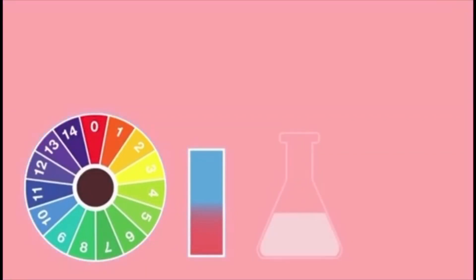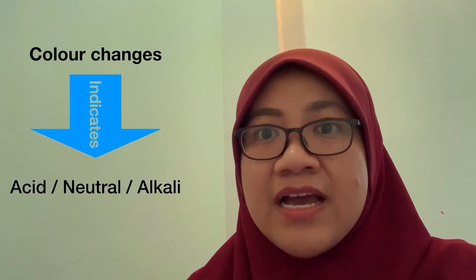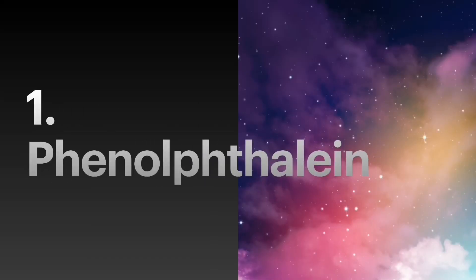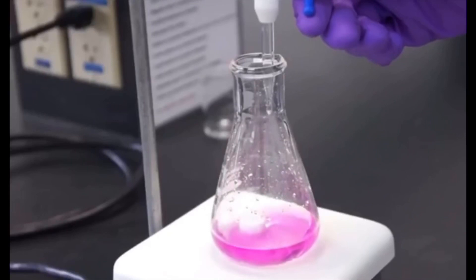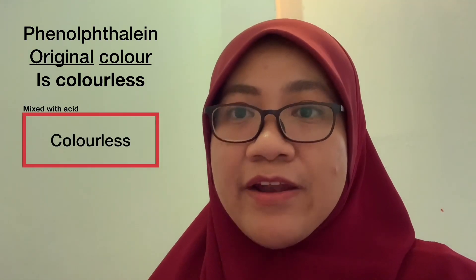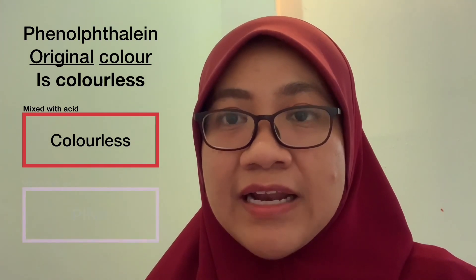Now let's talk about indicators. An indicator is a substance that has a distinct color and changes color when tested on either an alkali or acid. Phenolphthalein is a chemical compound used as an indicator for alkaline titration — a procedure used to measure the amount of alkaline needed to neutralize an acid. The original color of phenolphthalein is colorless. When mixed with acid, it stays colorless. But when mixed with an alkali, it changes to pink.